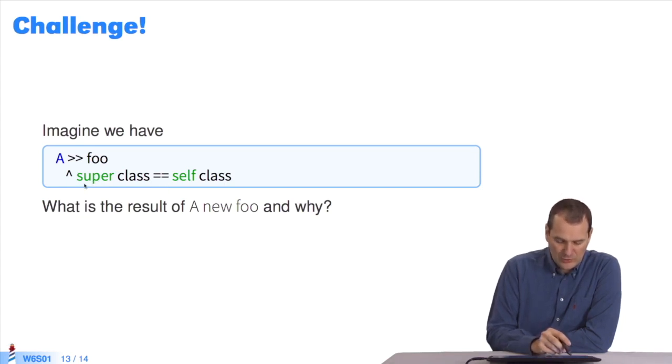In fact, I'm asking, is the object obtained with super class the same as the object obtained with self class? I defined this method, which will return true or false. My question for you is, what is the result of A new foo? I create a new instance of A and I send the message foo, which will edit this message. What is the result, and why? You'll have to think, because I won't give you this answer.